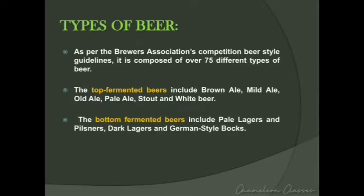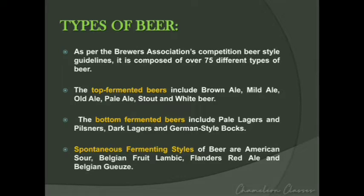Bottom-fermented beers work at lower temperatures of 5 to 10 degrees Celsius, where yeast works less vigorously and produces slow carbon dioxide. These include pale lagers and pilsners, dark lagers, and German-style bocks. The third type is spontaneous fermenting styles, where brewers can put controlled yeast strains deliberately into sugary liquids. The moment yeast and bacteria come in contact with the liquid, fermentation starts.